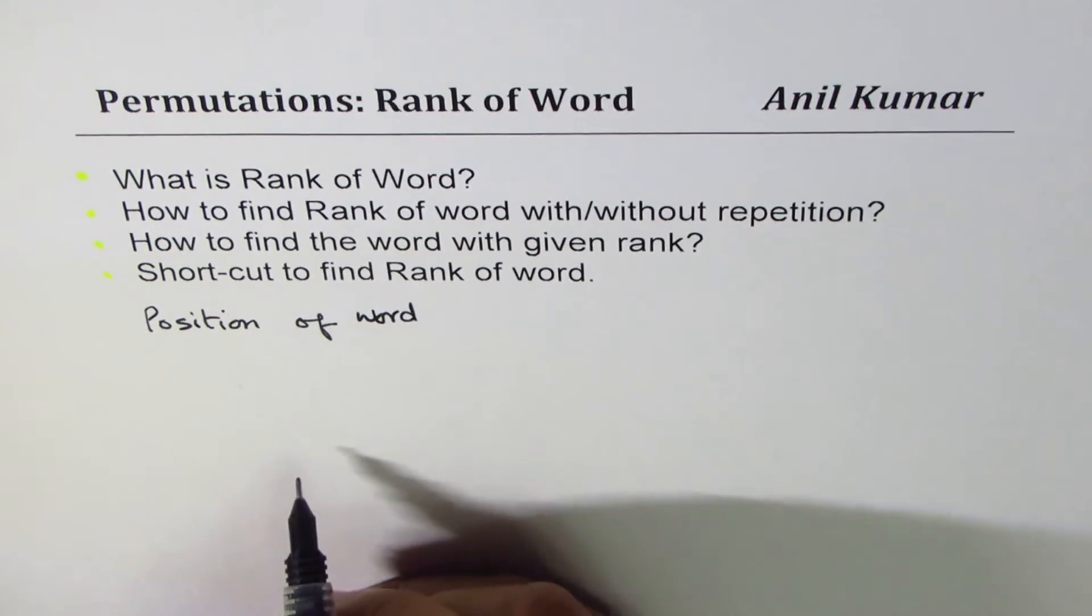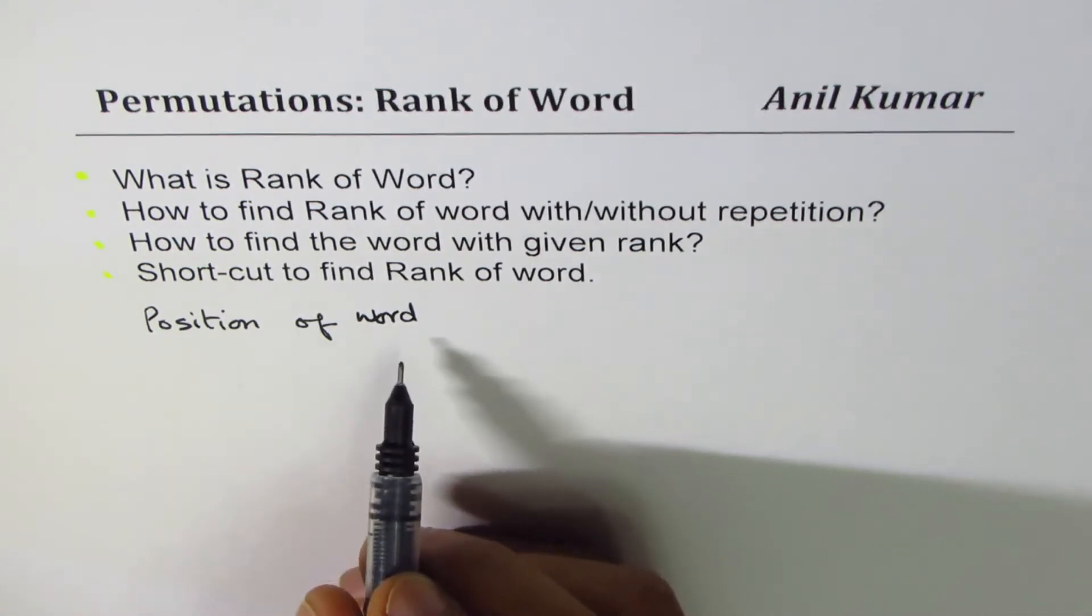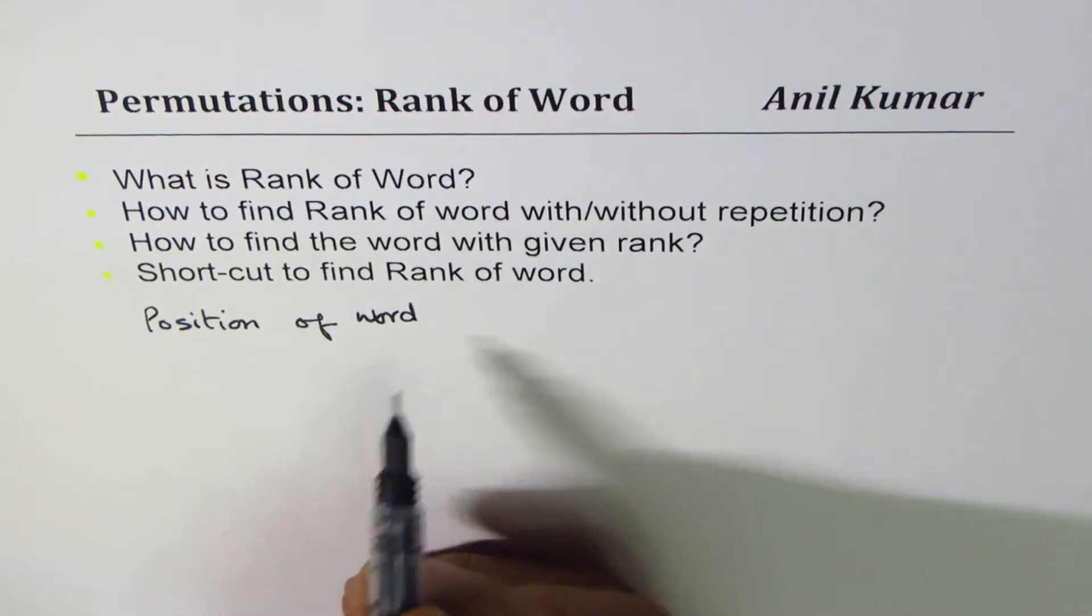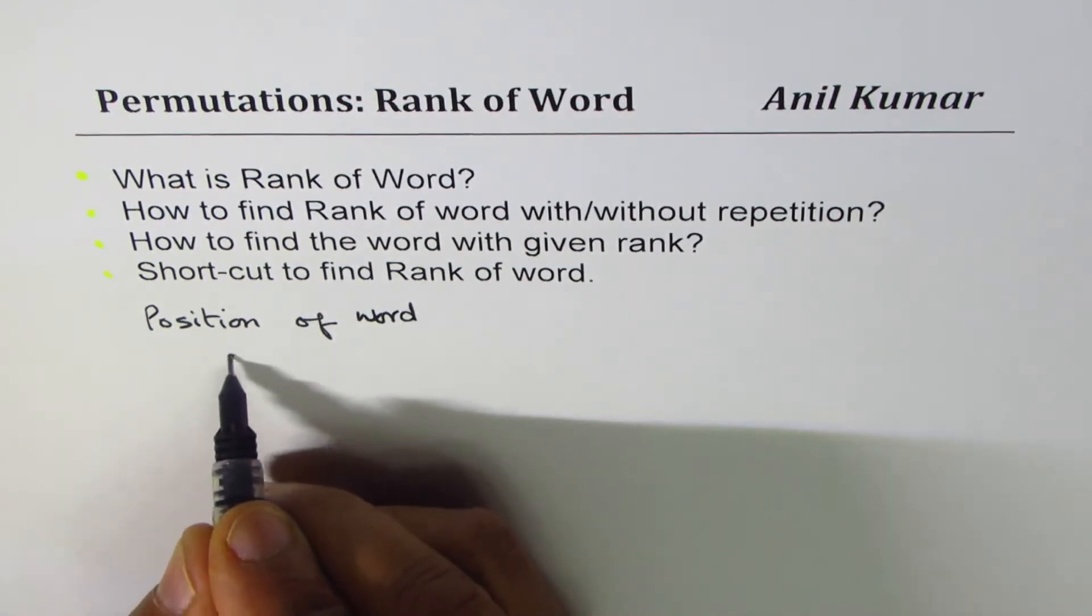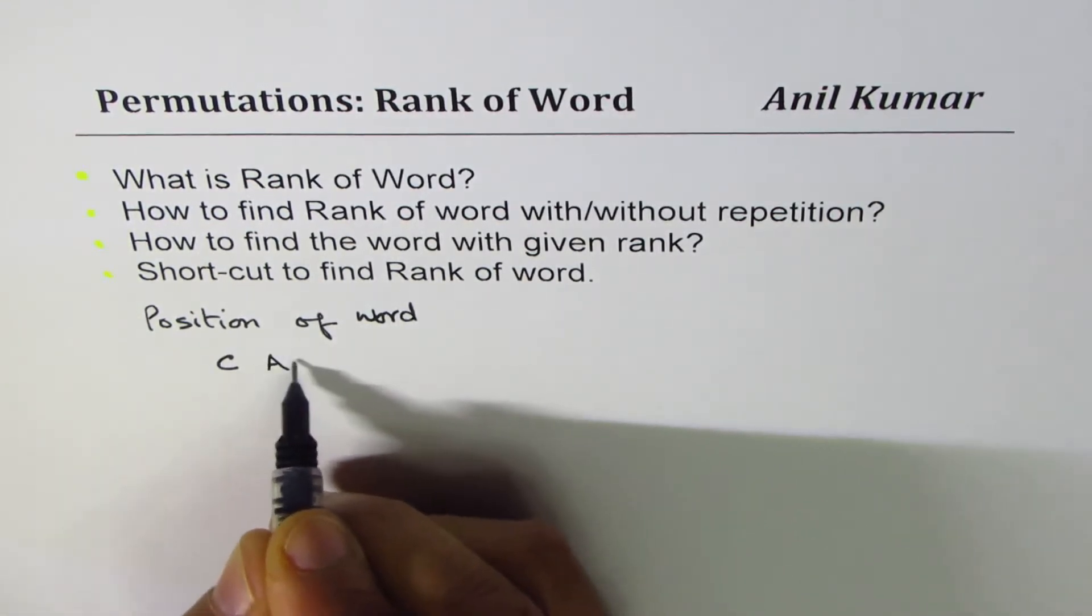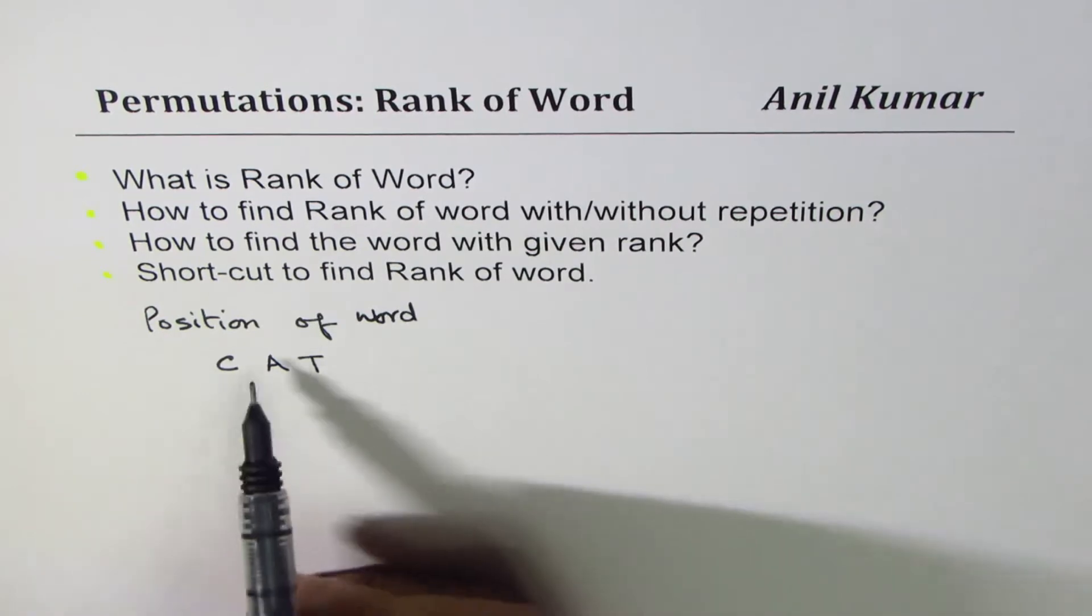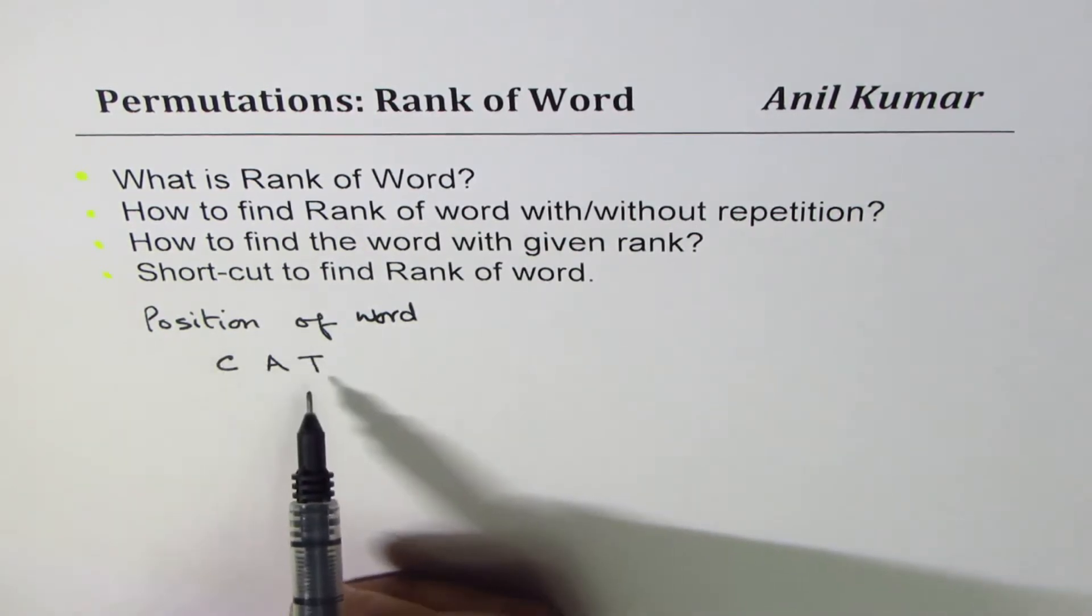Let me take an example before getting into the definition. Let's take a simple word, let's say CAT. Now it has three letters in it. With these three letters, how many words, meaningful or meaningless, can we make? That is where the permutation comes in.